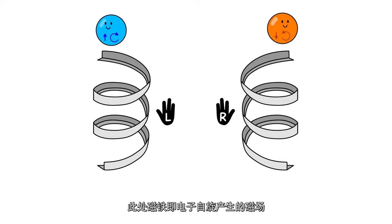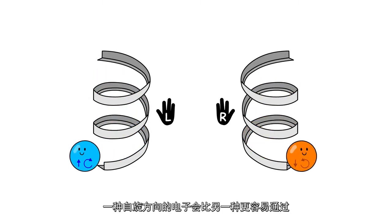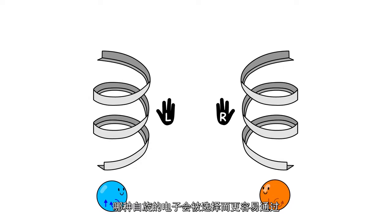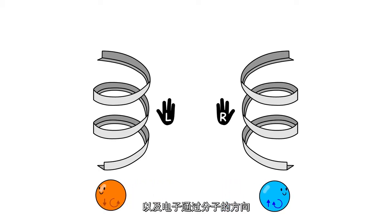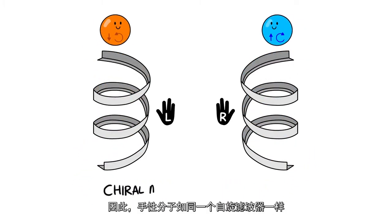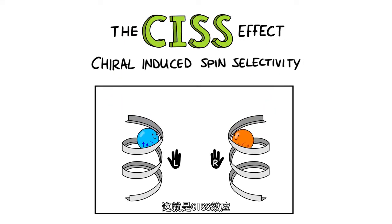Therefore, when an electron is transferred through chiral molecules, one spin is preferred over the other. Which spin is preferred depends on the handedness of the molecules, right or left hand like symmetry, and on the direction of motion. So, chiral molecules are like spin filters. This is the SysEffect.